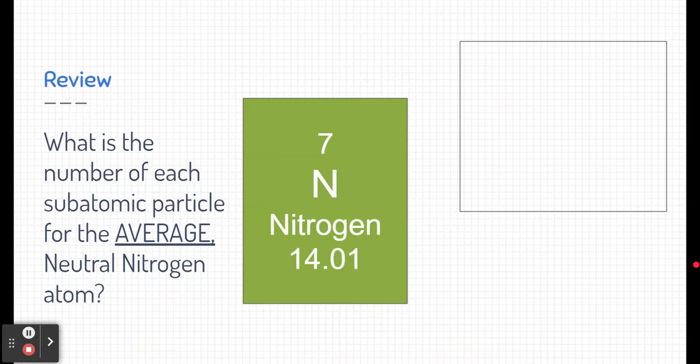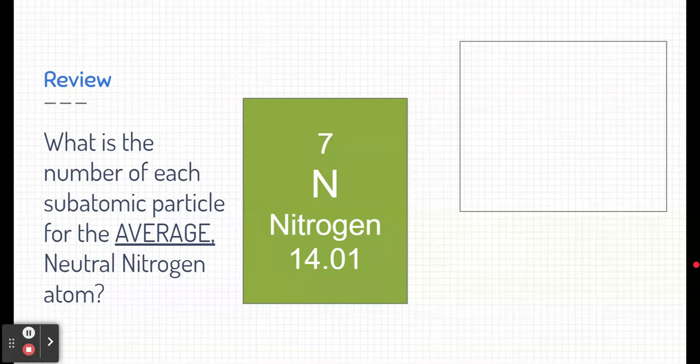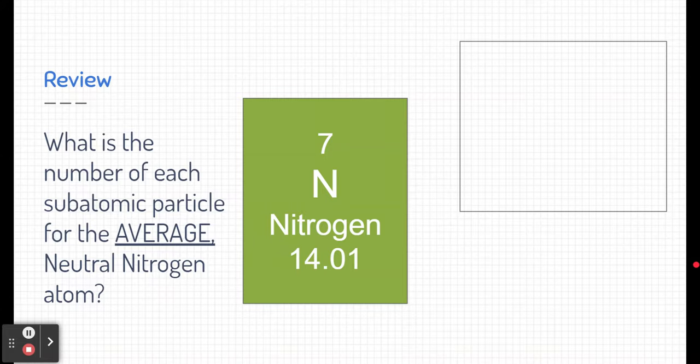I hope you took an opportunity to pause this video, but let's go ahead and go through the answer. The periodic table has some important information. This number here at the top is called the atomic number and it lets us know the number of protons of an atom. That's always true for that element. That can't change. Nitrogen always has seven protons.